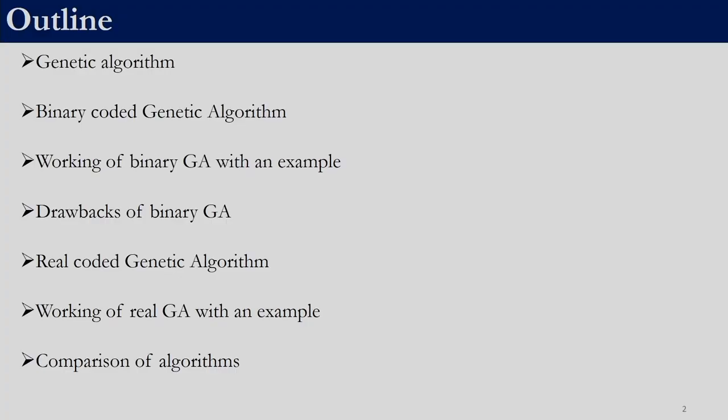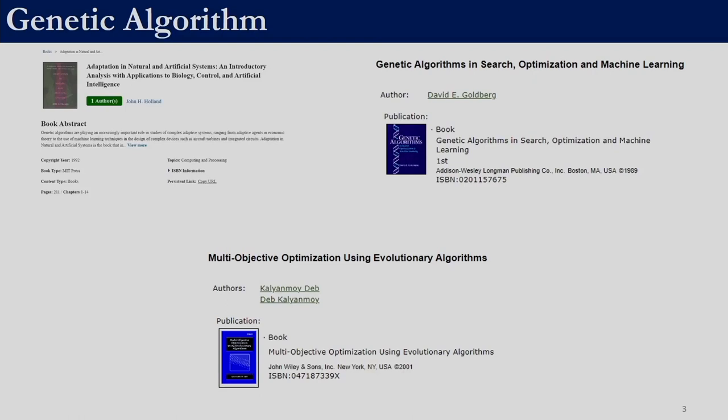Welcome back. In today's session we will be looking at genetic algorithm. Genetic algorithm is the most popular among the heuristic techniques which we have discussed. This session we will broadly divide into two parts. In the first part we will look into binary coded genetic algorithm and in the second part we will look into real coded genetic algorithm. In binary coded genetic algorithm we will first look at the working principle and then take an example. We will follow it with a brief discussion on the drawbacks of binary coded genetic algorithm and then move on to real coded genetic algorithm. These are three classical books on genetic algorithm.